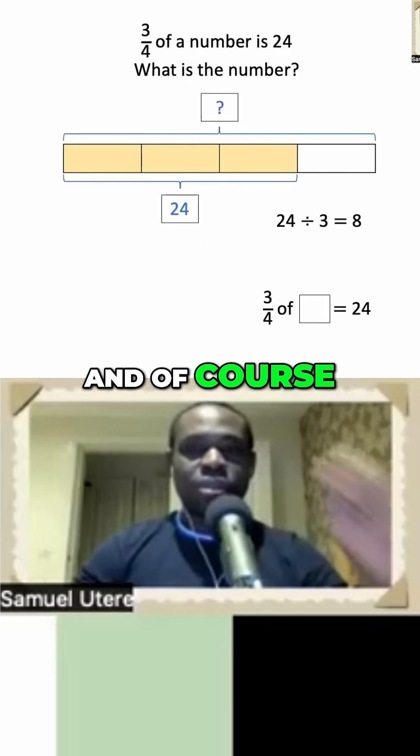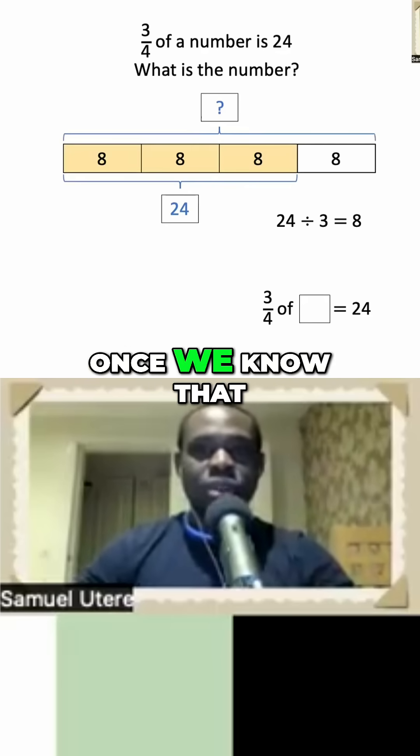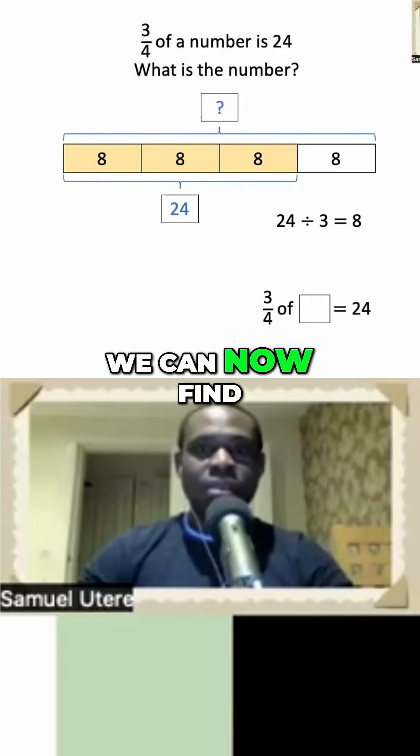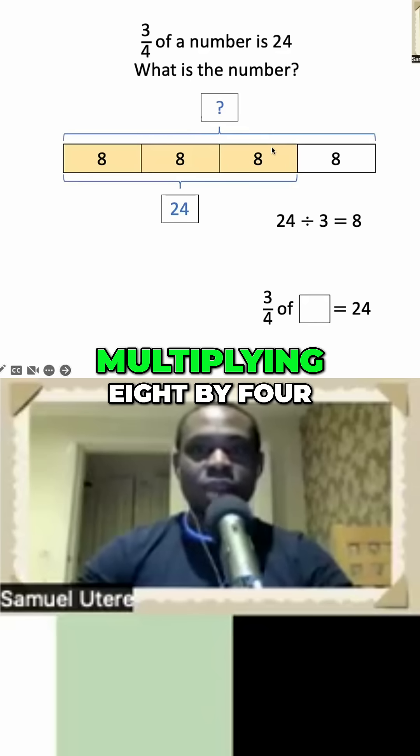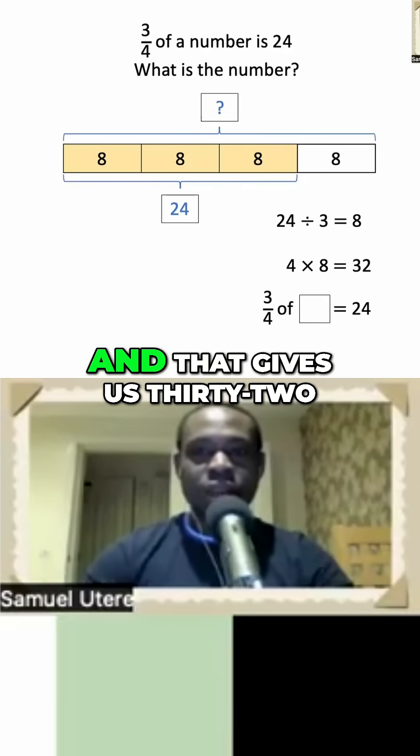And of course, we can now multiply once we know that each is eight. We can now find the whole lot by multiplying eight by four because we have four parts altogether. And that gives us 32.